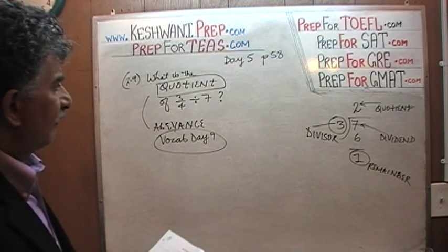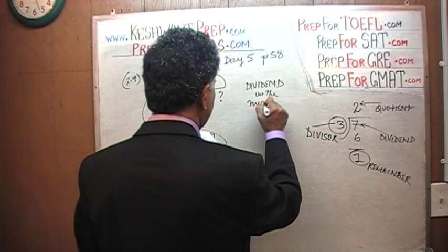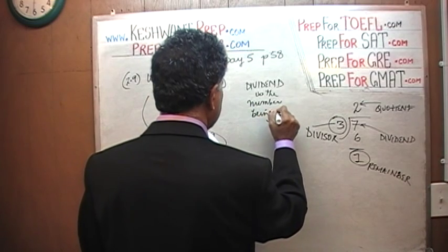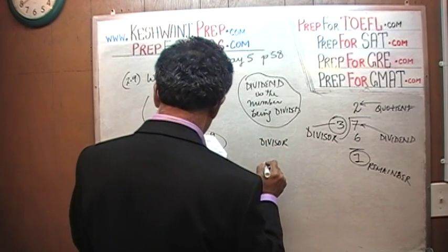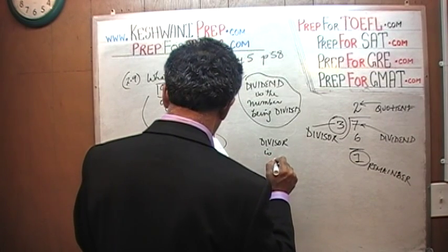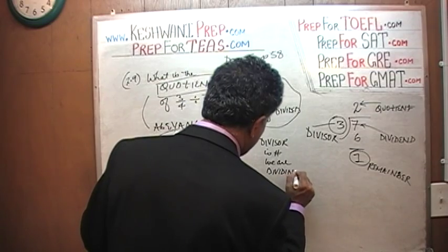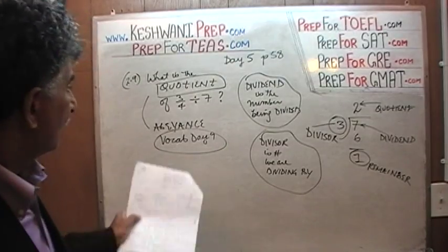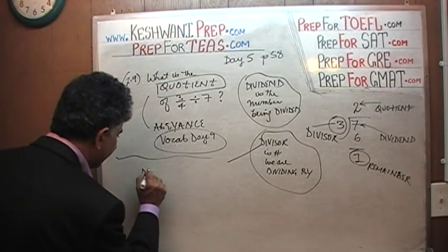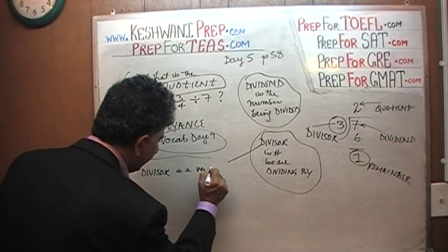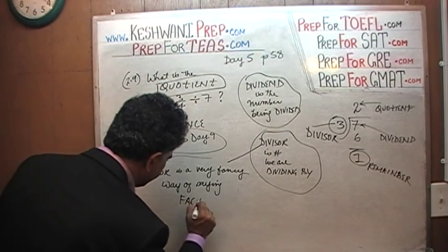Let me write all of this down. The dividend is the number being divided — in our case, 7. The divisor is the number we are dividing by. Another way to remember the divisor: the divisor is a very fancy way of saying 'factor.'